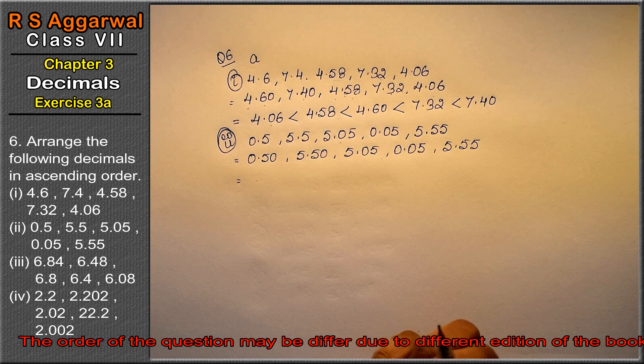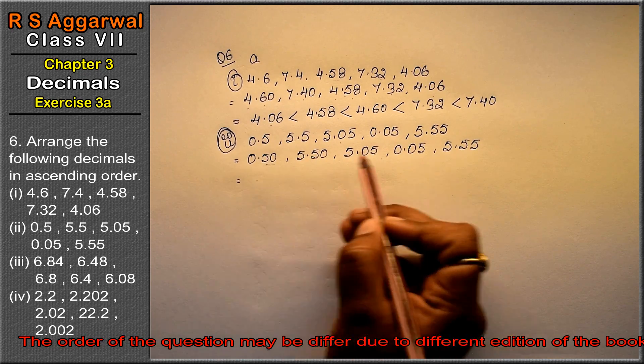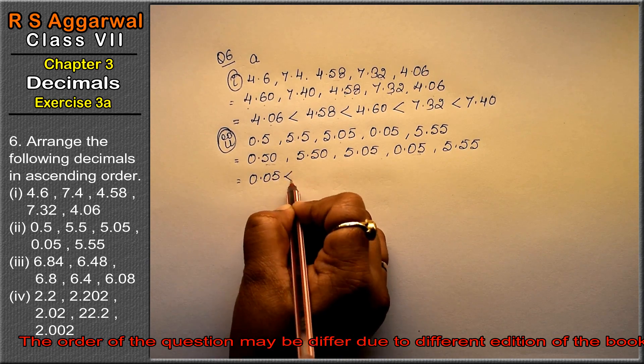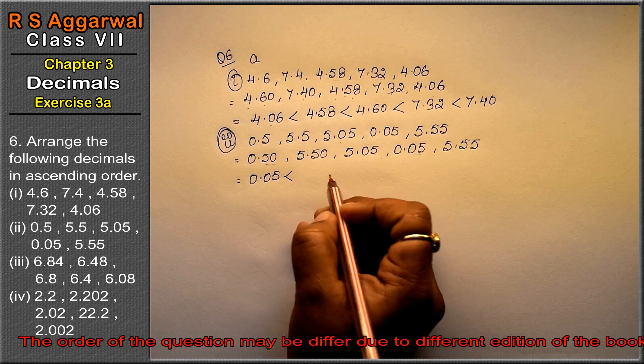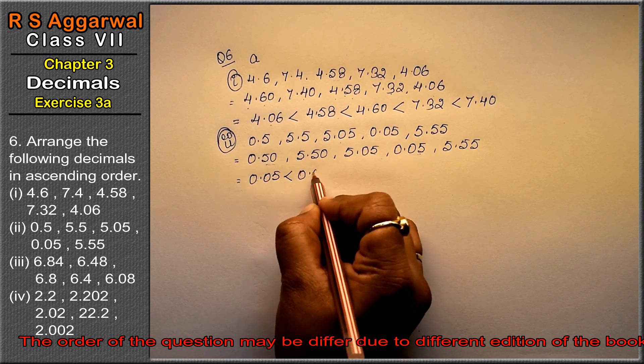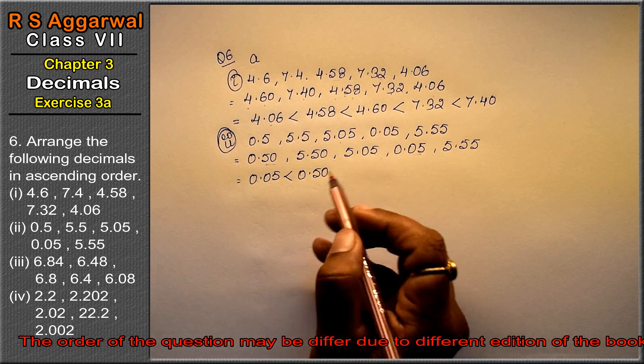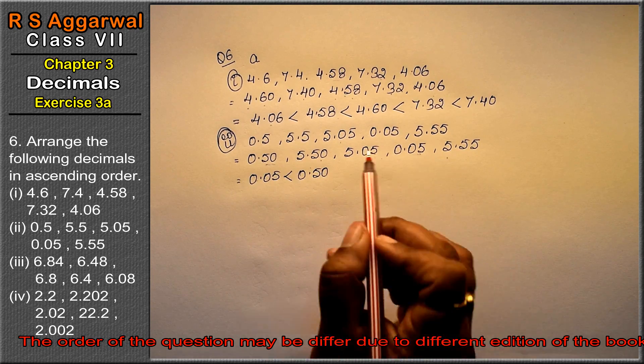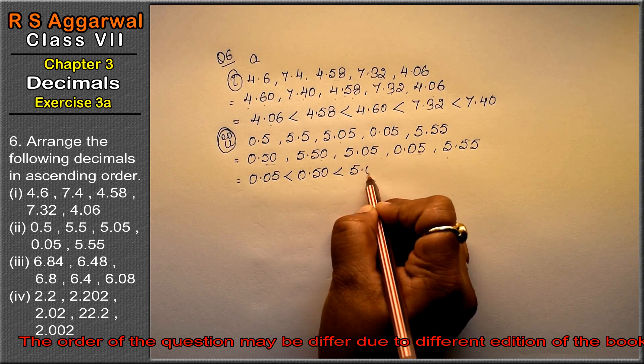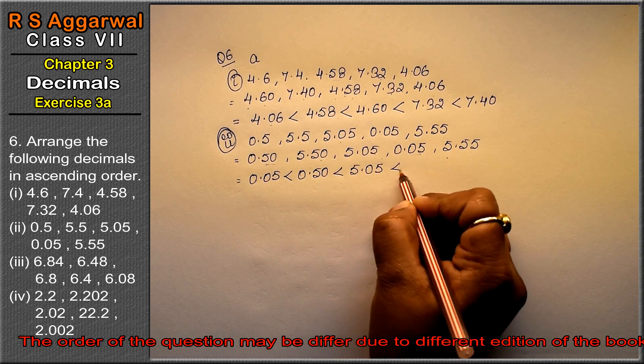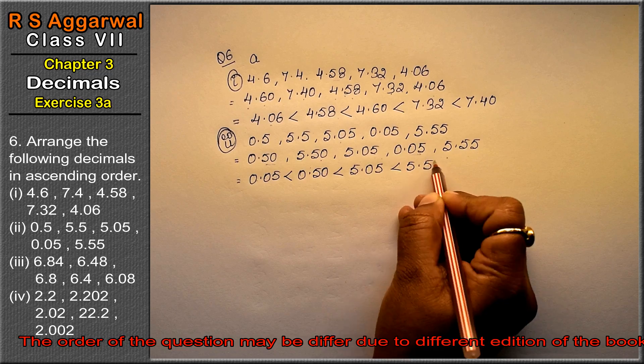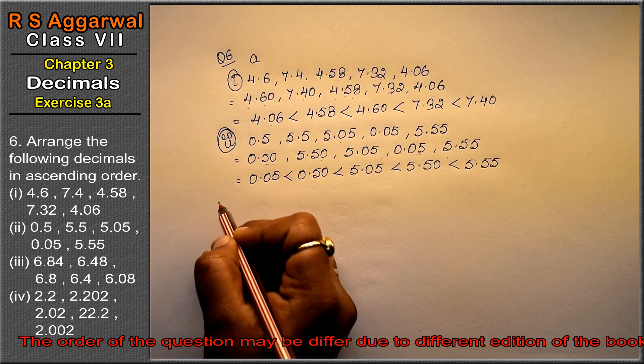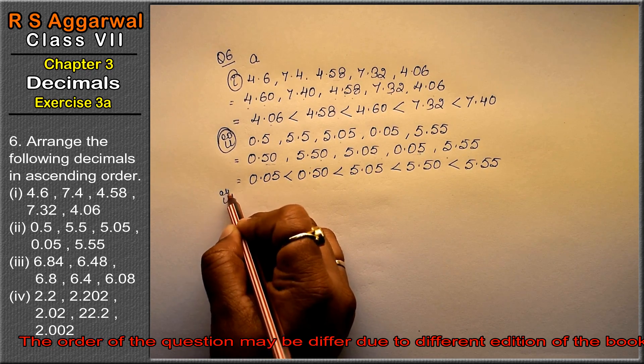Now what is the smallest one? 0.05, then 0.50, then 5.05, then 5.50, then 5.55. Let's do third part.